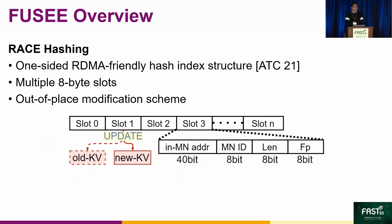For the hash index, Fusee uses RACE-Hoshen, a one-sided RDMA-friendly hash index structure from previous work. It contains multiple array slots, each containing a pointer to the location of the KV pair, the length of the KV pair, and a fingerprint that accelerates search operations. It uses an out-of-place modification scheme for KV updates: whenever new data needs to be updated, the new KV pair is first written to a new location, and the slot is atomically modified to point to the new location.